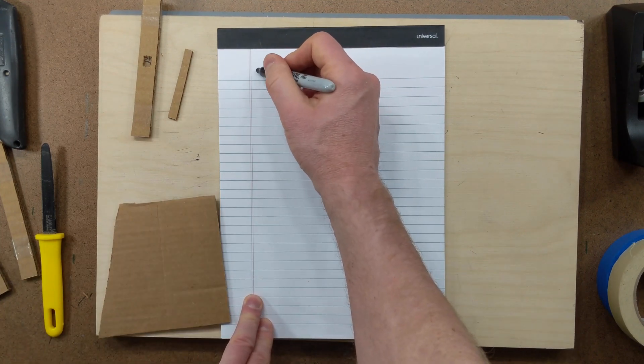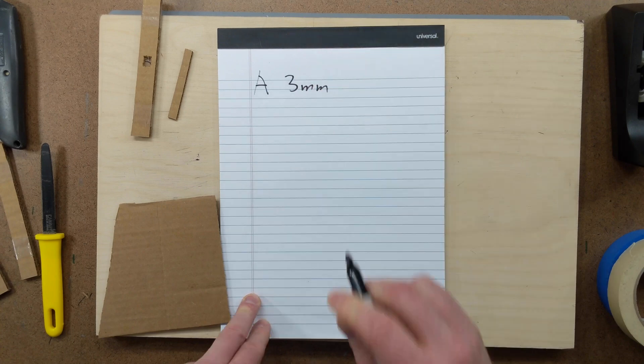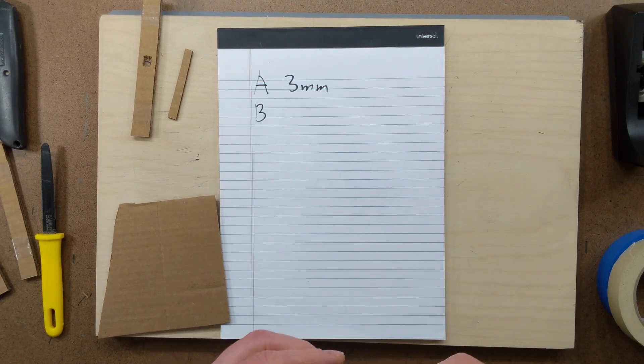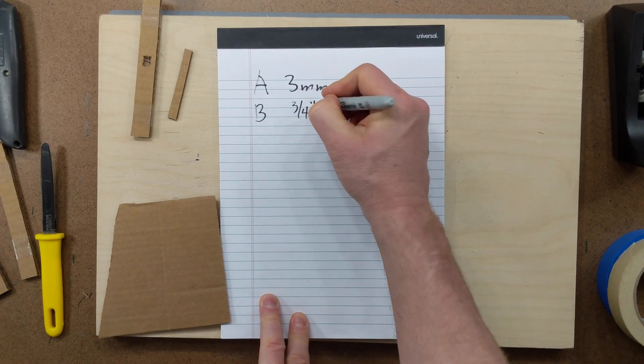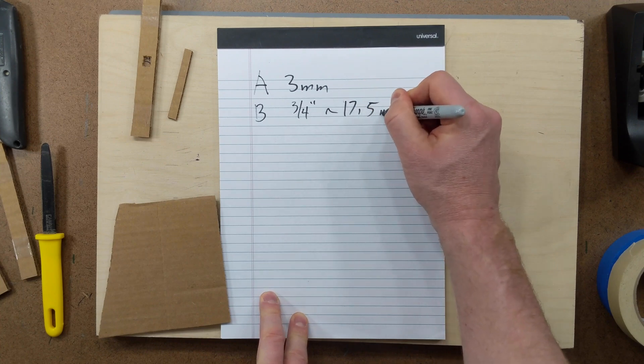So that means we have length A of 3 millimeters. Now we need length B, and we measure our plywood. In this case, I'm using 3/4-inch plywood that measures approximately 17.5 millimeters.